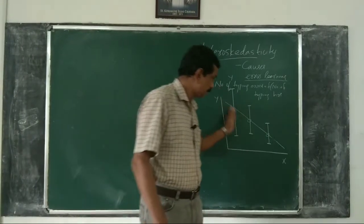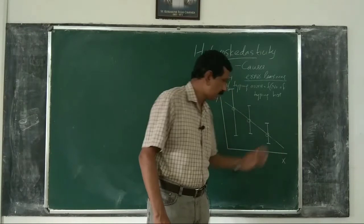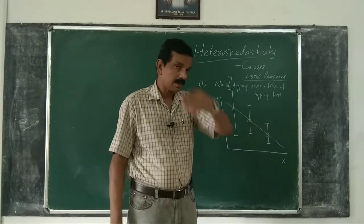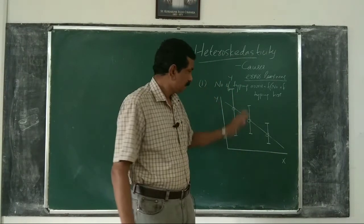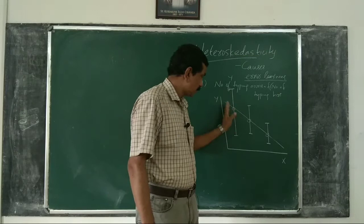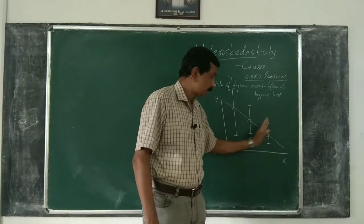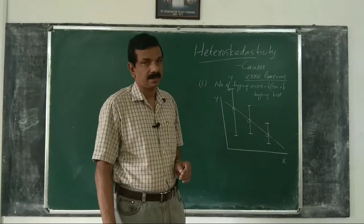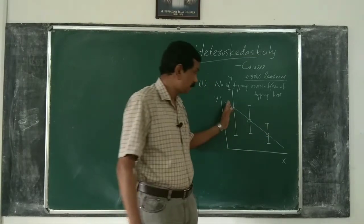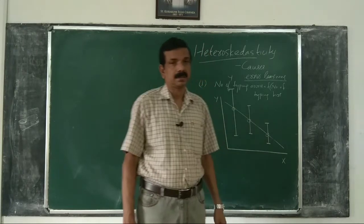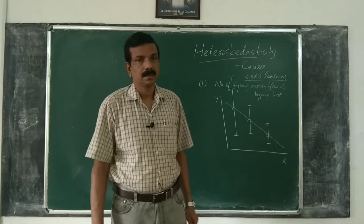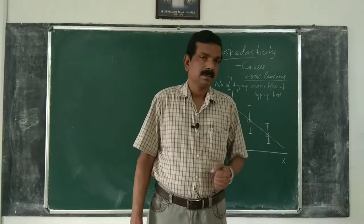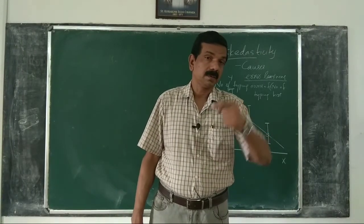So, in this type of model, we expect that over time there will be a reduction in error variance. Not only does the average number of errors decrease — we are talking about what happens to the variance of errors — variance of errors also decreases. That is one reason for heteroscedasticity.